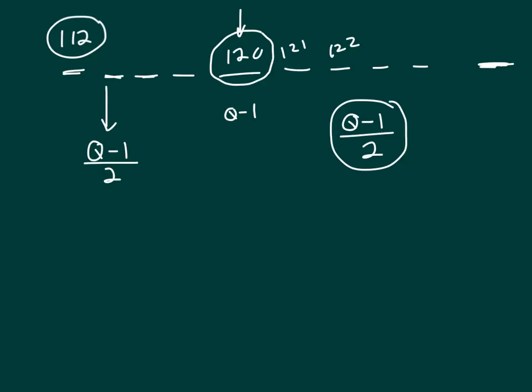So, if I have Q minus 1 over 2 integers up here, in this part, that's how many I have, the very last number would be 120 plus Q minus 1 over 2.